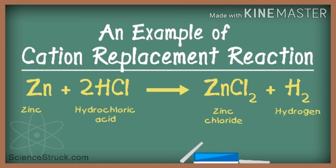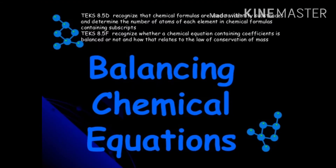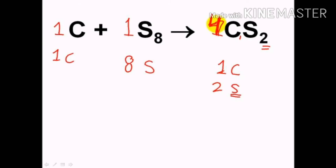एखादी chemical reaction ची chemical equation लिहिल्यावर, ते equation balanced असले पाहिजे. Manjez, balanced chemical equation means the number of atoms of reactants should be the same as the number of atoms of products. Reactant आणि product मधले जे atoms आहेत तेंची संख्या same असली पाहिजे. त्यामुळे remember: the chemical equation should be balanced. If it is not balanced, you have to balance it by selecting suitable coefficients, which should always be whole numbers and not fractions.